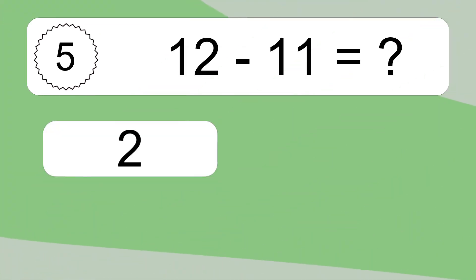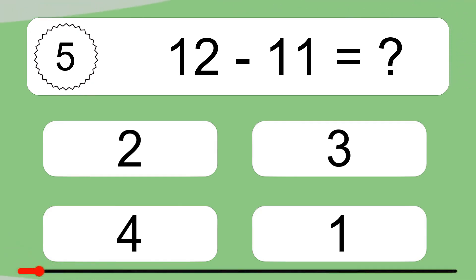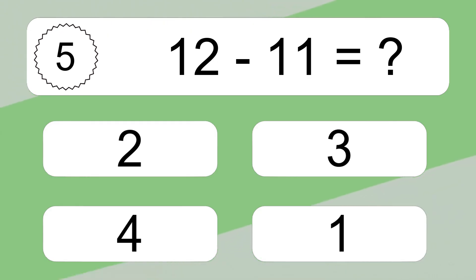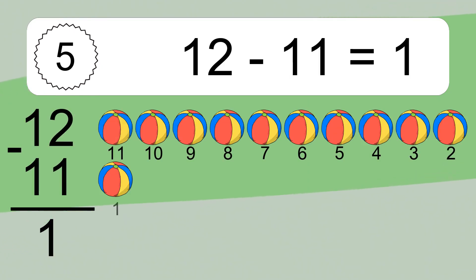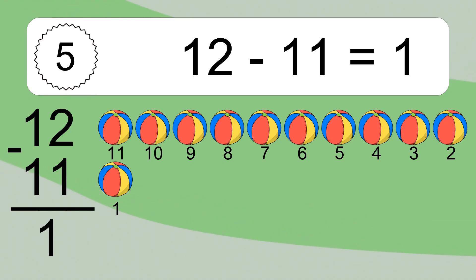12 minus 11 equals what? 12 minus 11 equals 1. Let's count it. 11, 10, 9, 8, 7, 6, 5, 4, 3, 2, 1.